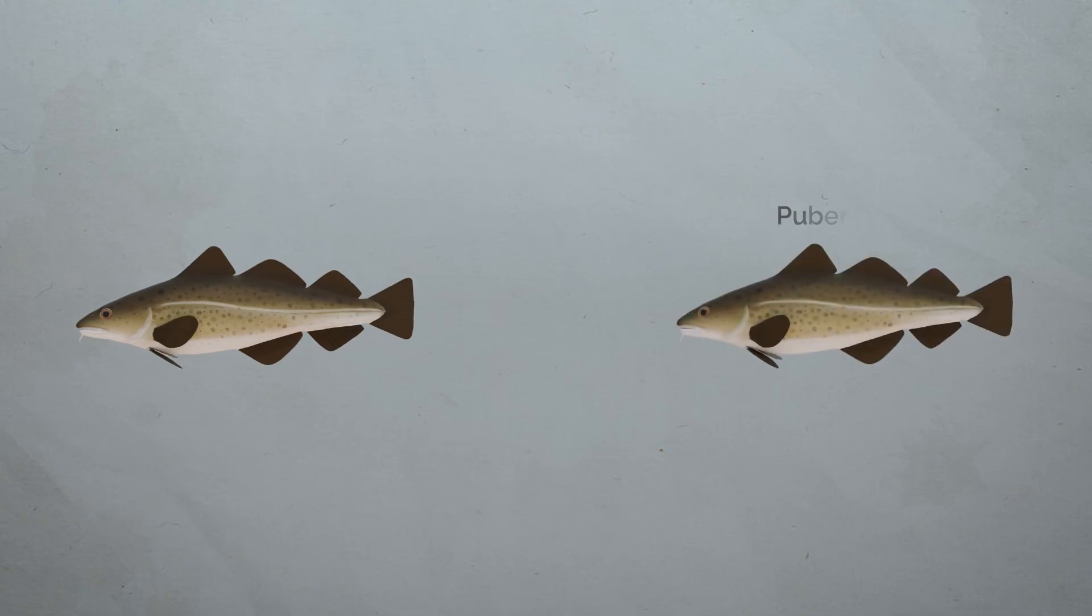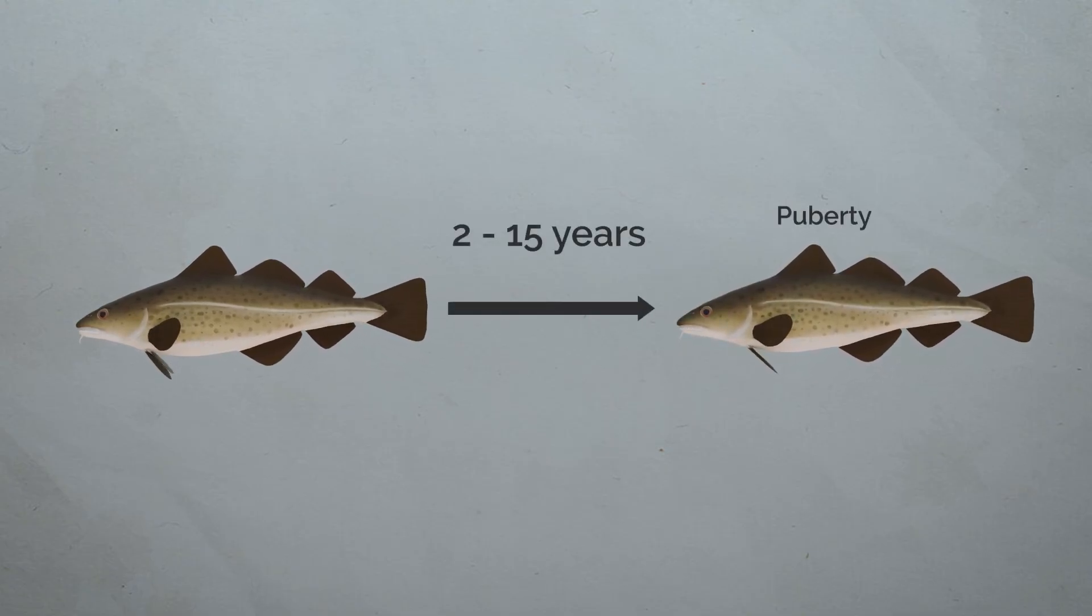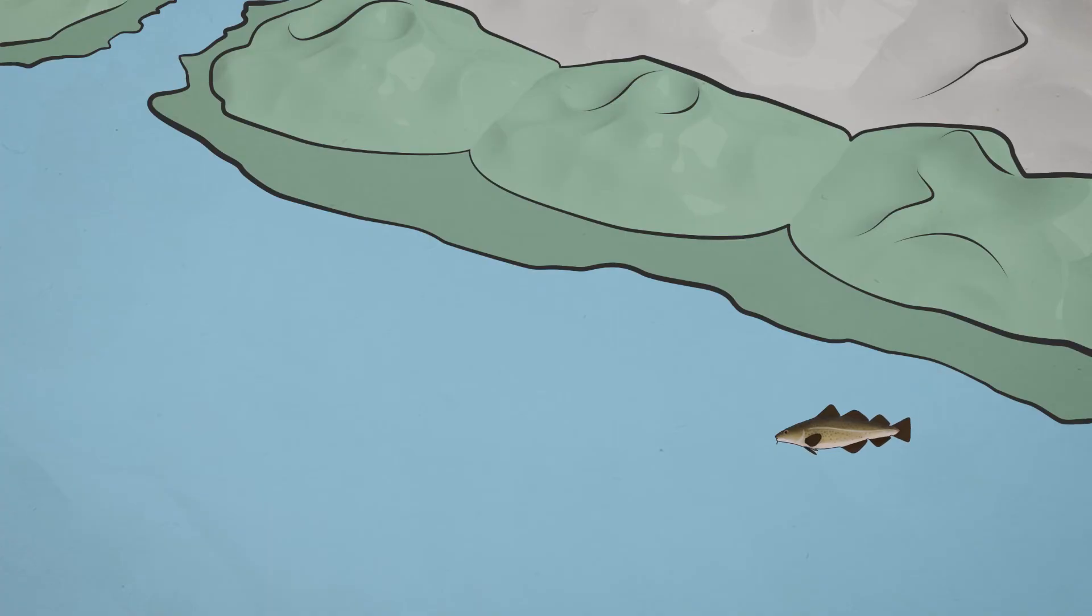The period until puberty lasts from 2 to 15 years. When the cod has reached sexual maturity, it will normally migrate to the spawning areas. It is unknown whether it migrates to the area where it was born, but at least for coastal cod, this seems to be common.